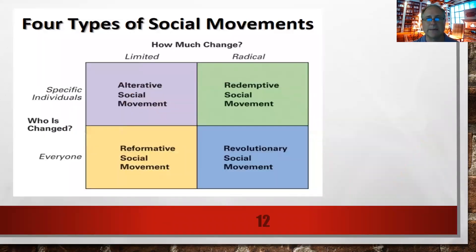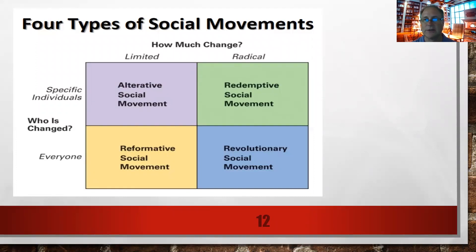Finally, we have four types of social movements. Social movements are organized activities in which large numbers of people organize to promote or resist social change. They can be classified according to their target — either individuals or society — and the amount of change sought, either partial or total. Alternative social movements seek only to alter some particular behavior of people. Redemptive social movements target specific individuals but seek radical and thorough change. Reformative social movements seek to reform some aspect of society. And transformational or revolutionary social movements seek to transform the social order itself and replace it with a new version.